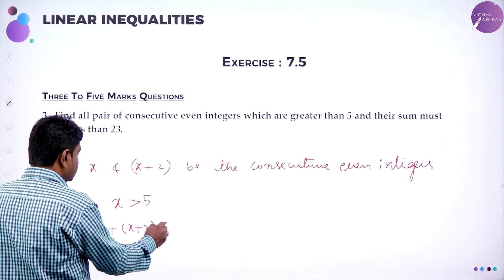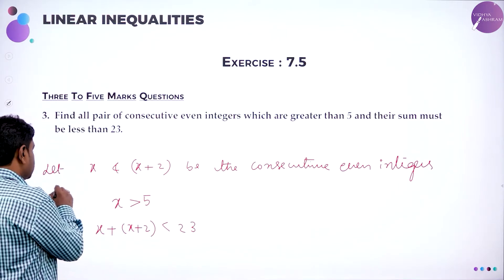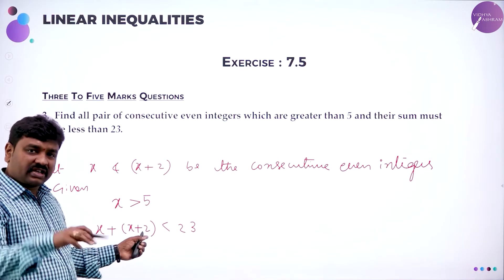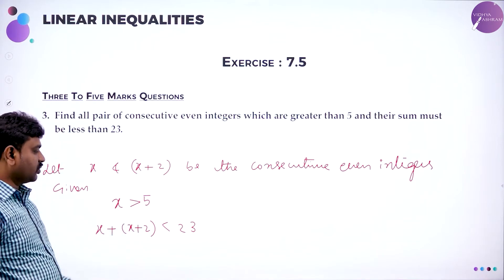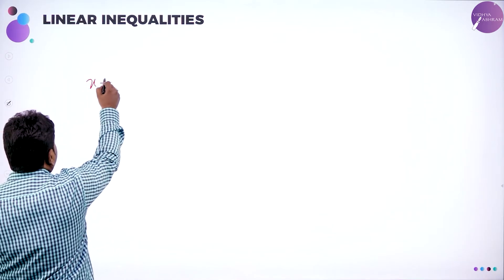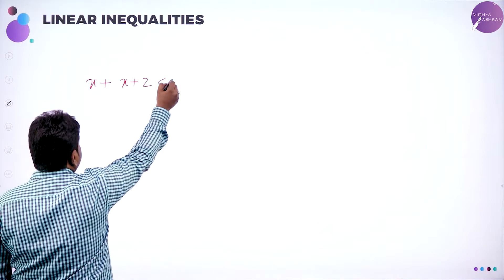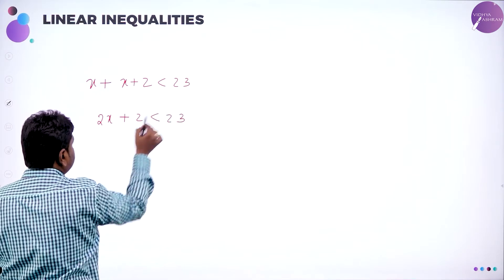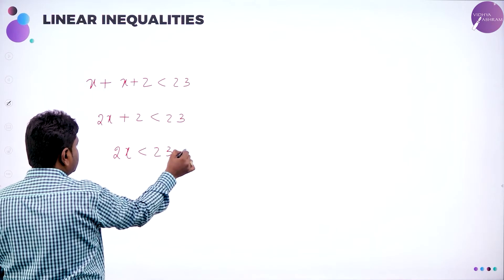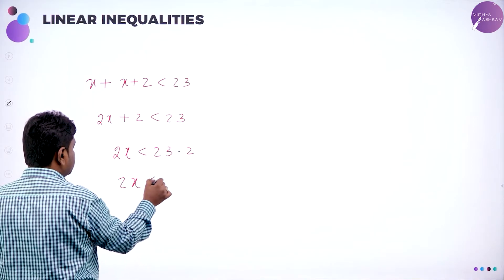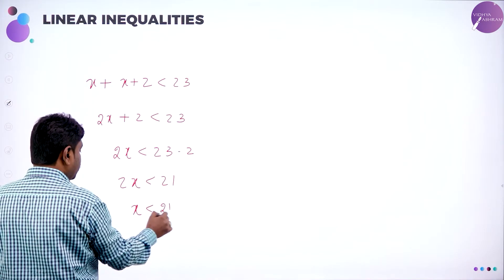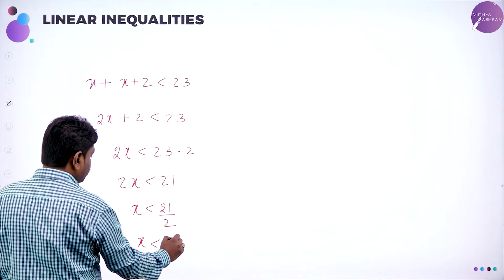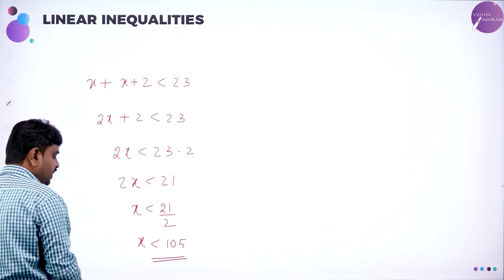And their sum should be less than 23: x plus (x plus 2) is less than 23. Both are greater than 5 — any one is greater than 5, the next number will also be greater than 5. Sum is less than 23. Now let us solve this: x plus x plus 2 less than 23 gives 2x plus 2 less than 23. So 2x is less than 21, and x is less than 21 by 2, giving x strictly less than 10.5.